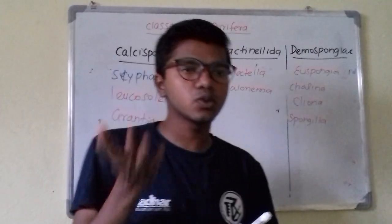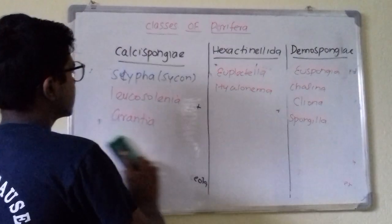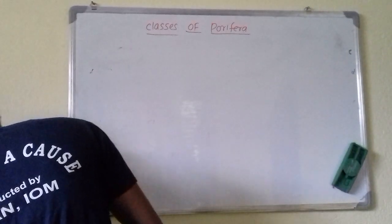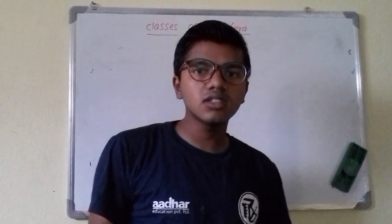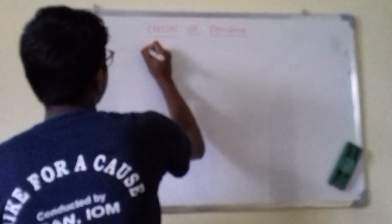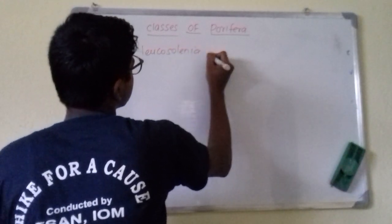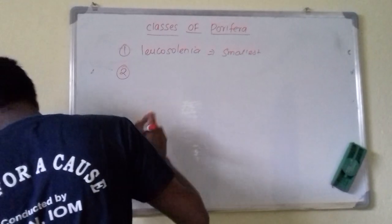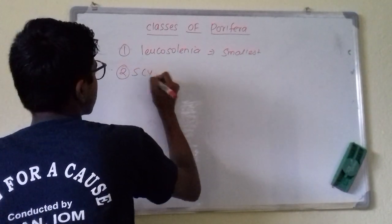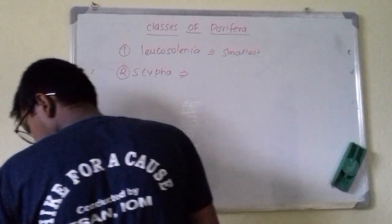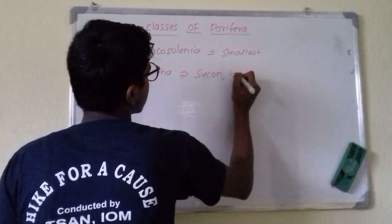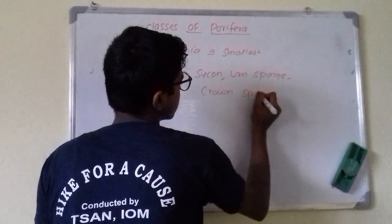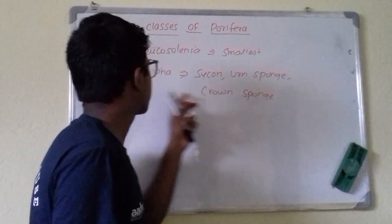Now we will deal with important sponges and their nicknames, which may be asked in exams. First, Leucosolenia is the smallest sponge in Porifera. Second, Scypha (Sycon) is known as the urn sponge or crown sponge — in exams you may be asked which sponge is known as crown sponge or urn sponge; the answer is Scypha.